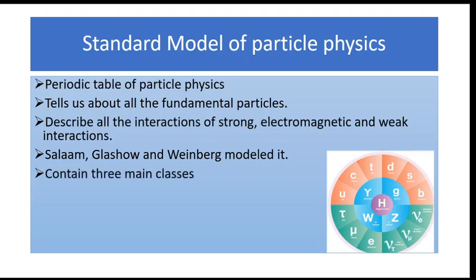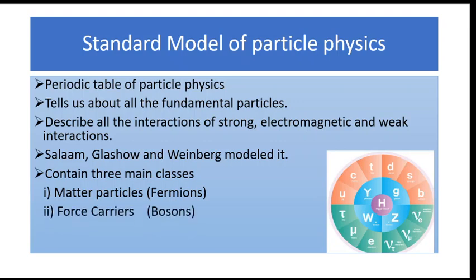The standard model consists of three main parts. The first is matter particles, which are fermions because their spin is one-half, represented by the outermost layer in the figure. The second is the force carriers, shown in the second layer, which includes four particles: W, Z, gamma, and photon. The third and central part is the Higgs boson, which is responsible for giving mass to all the particles.